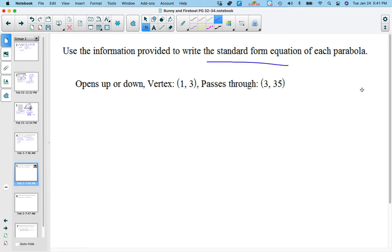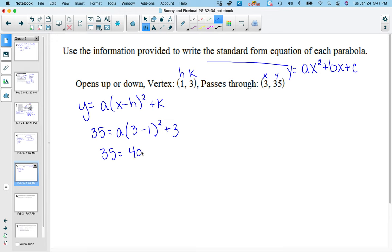All right, now these directions say to do it in standard form. Remember standard form is A x squared plus B x plus C, y equals. So, but we're going to do vertex form first, and then we're going to change it, I'll show you how to change it. So this is h, this is k, this is x, this is y. So we have this form first. So we've got 35 equals A, 3 minus 1 quantity squared plus 3. So I'm just filling in everything that I need to substitute. So then 3 minus 1 is 2, 2 squared is 4, so I get 4A plus 3, subtract the 3, and divide by 4. So we get A equals 8.